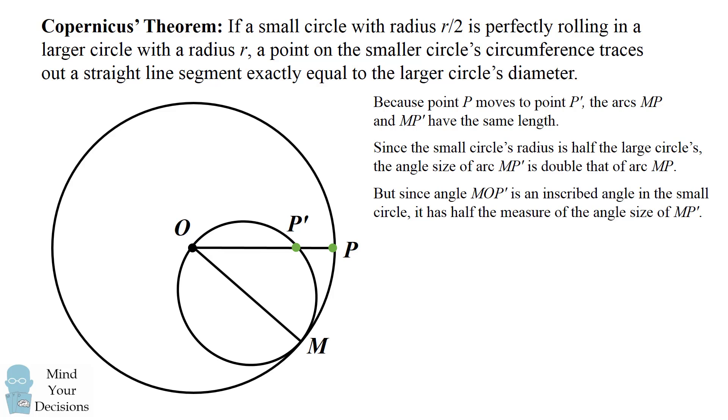Furthermore, since angle MOP' is an inscribed angle in the small circle, it has half the measure of the angle size of the arc MP'.